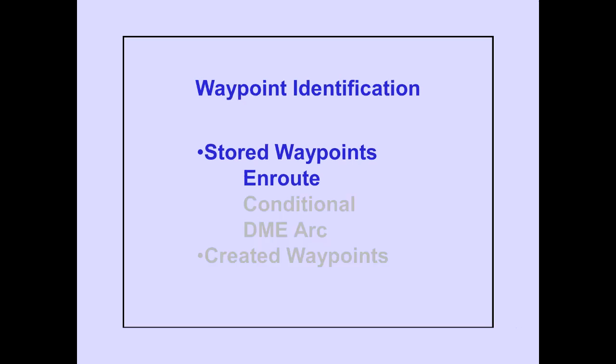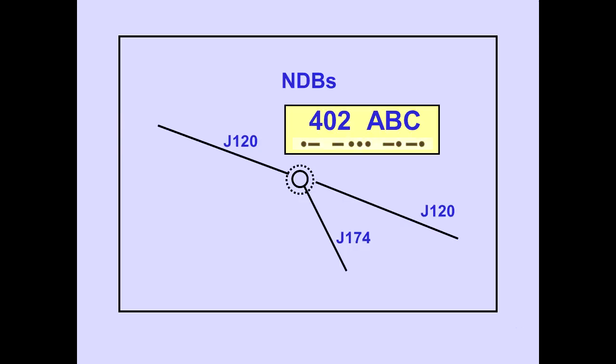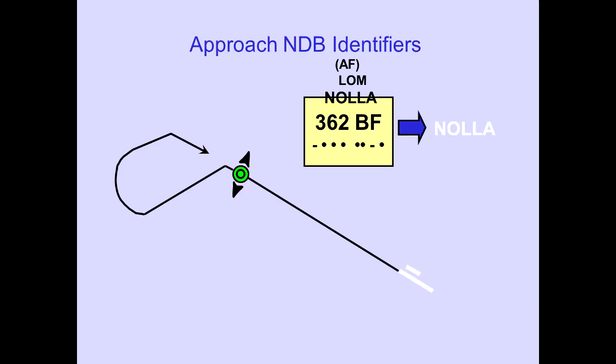Let's look at enroute waypoints. Waypoints stored in the NAV database, such as VORs and VORTACs, named intersections, and reporting points are identified by their official identifier or name. NDBs are stored in the database and can be identified by the station identifier. Non-directional beacons associated with approaches are identified by their official name, not the identifier.